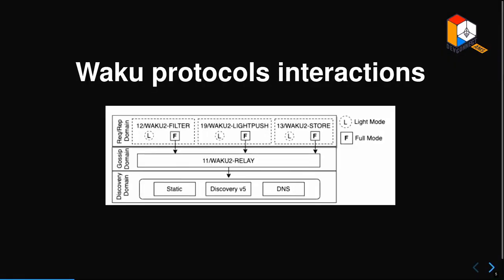Looking briefly at protocol interactions in VACU: you have this gossip domain with VACU relay, which is based on libp2p gossip sub for peer-to-peer messaging. Then you have helper utility protocols. For example, filter protocol is for bandwidth-restricted nodes to receive just a subset of messages they care about. Light push is for nodes with short connection windows to push messages into the network. Store protocol is for nodes that want to retrieve historical messages sent to them while they were offline.